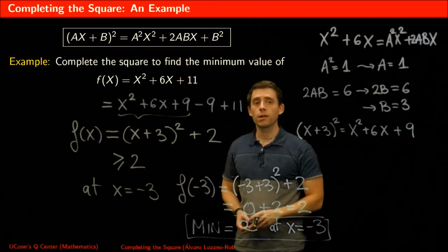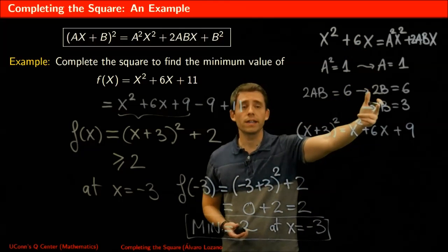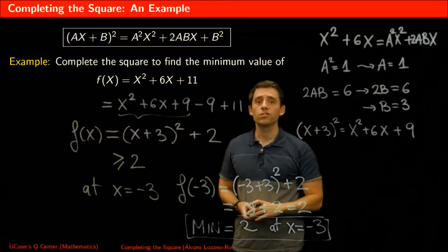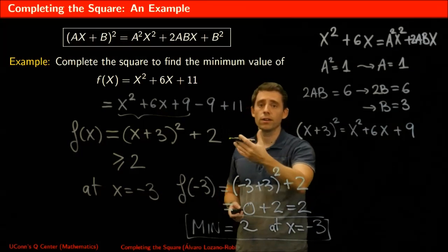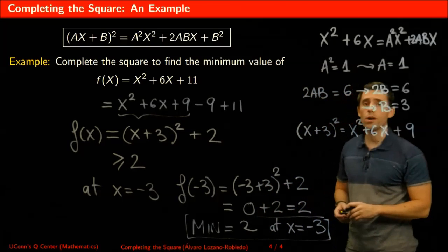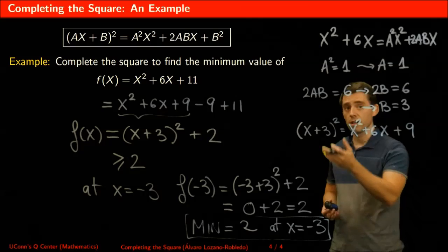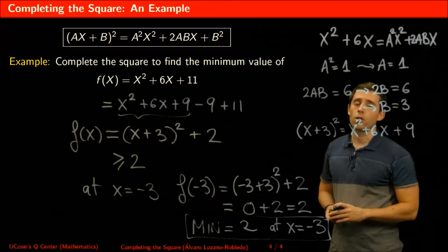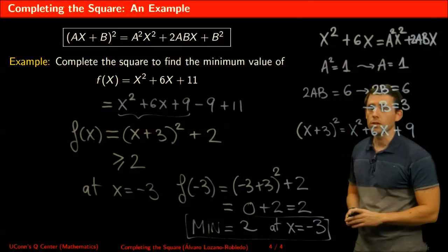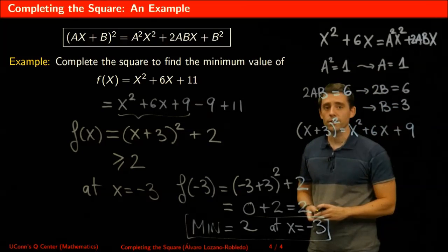So those are two examples of how you complete a square — finding the coefficients a and b, carrying out the method, and then using it for two typical applications: finding the roots of a quadratic polynomial, or finding the minimum value of a quadratic polynomial over the real numbers. That's it. Enjoy.